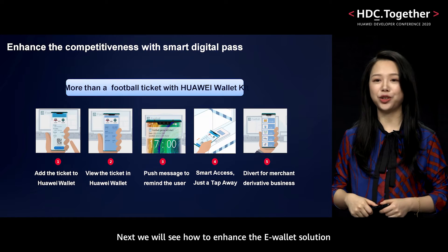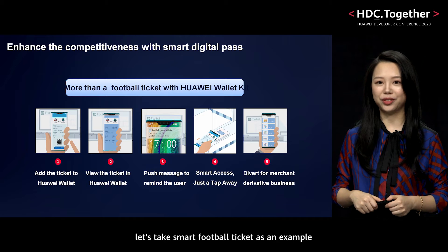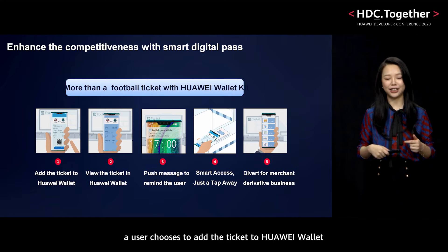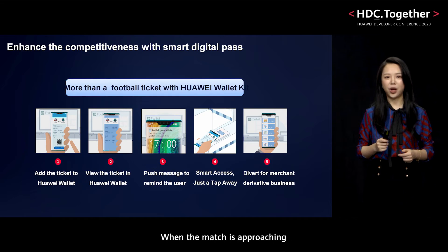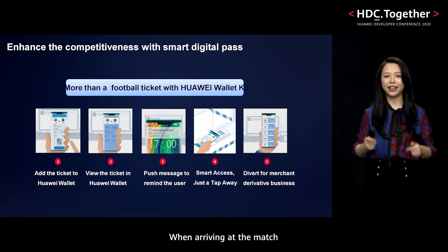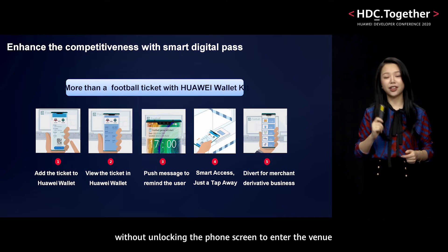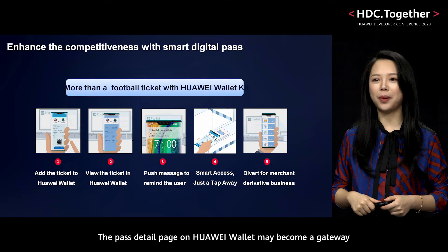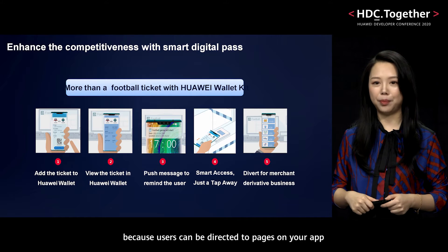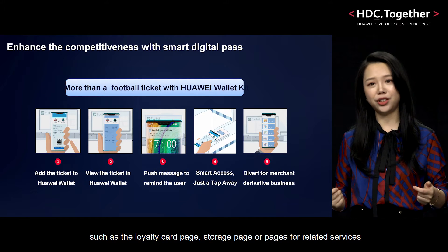Next, we will see how to enhance the e-wallet solution competitiveness with WalletKit. Let's take smart football tickets as an example. After buying a ticket through the app, a user adds it to Huawei Wallet. When the match is approaching, the user receives a reminder on the smartphone. When arriving at the match, the user only needs to swipe the phone without unlocking the screen to enter the venue. The pass detail page on Huawei Wallet may become a gateway through which your app receives heavy traffic, directing users to loyalty card pages, storage pages, or related services.